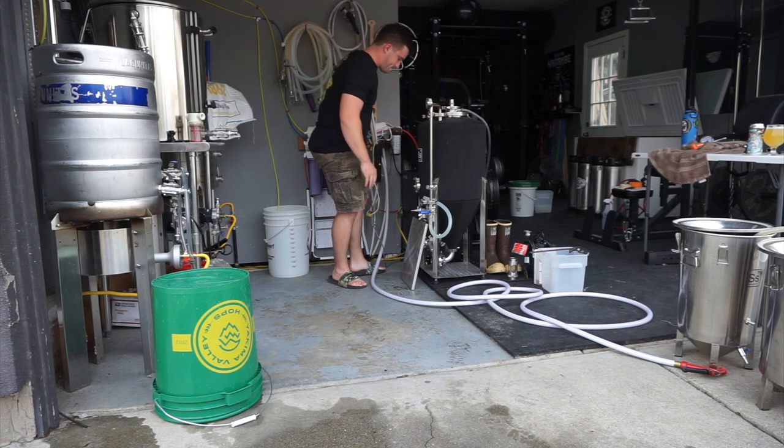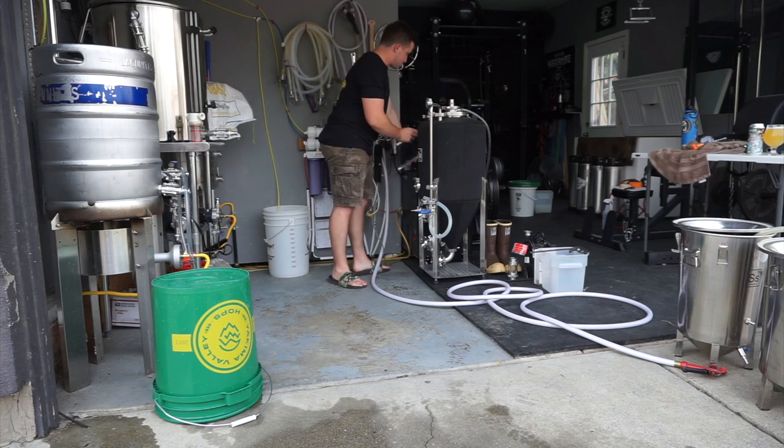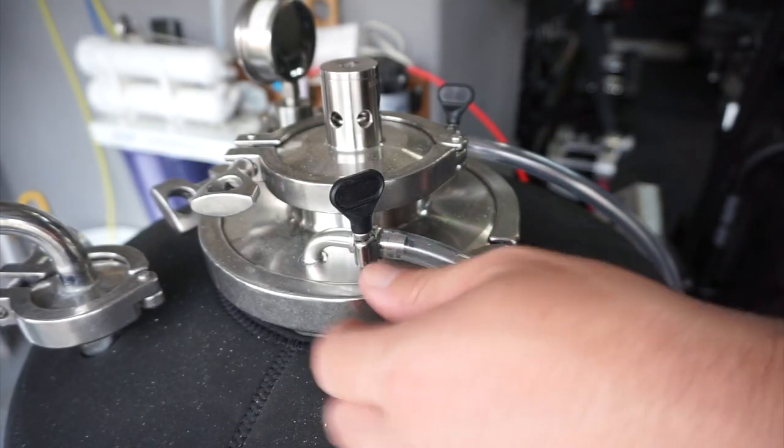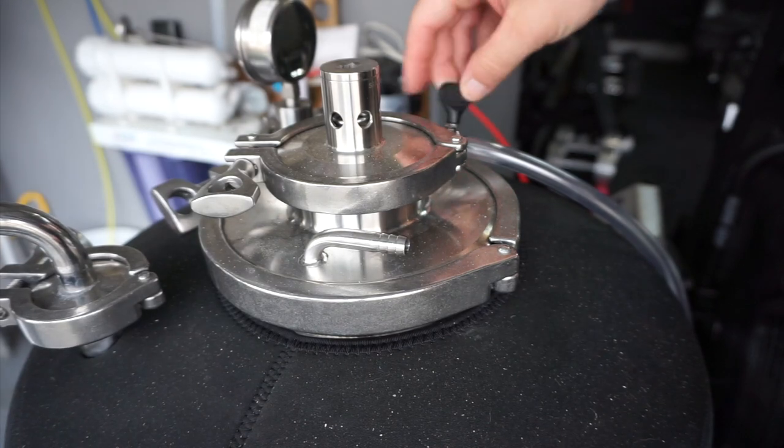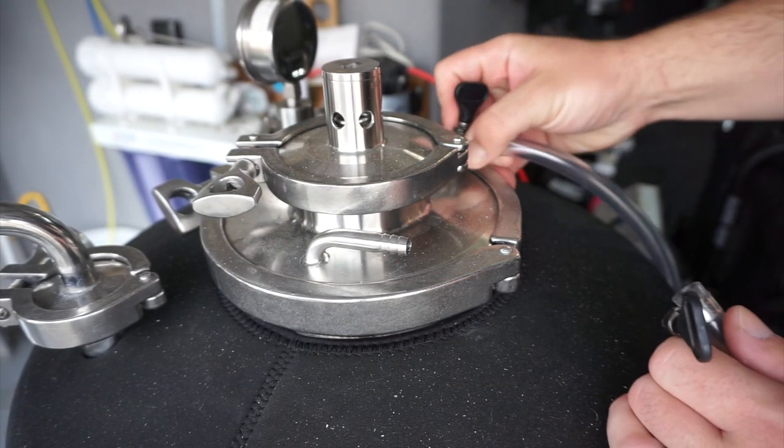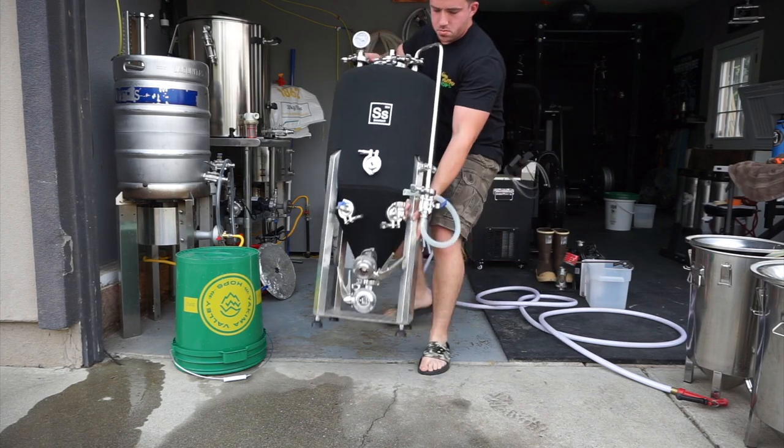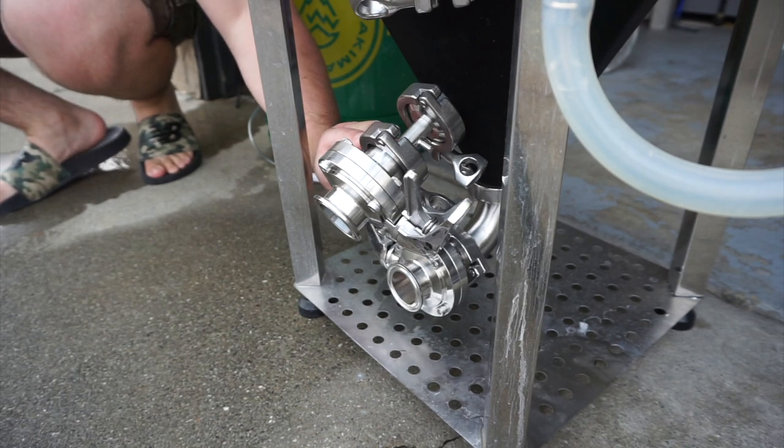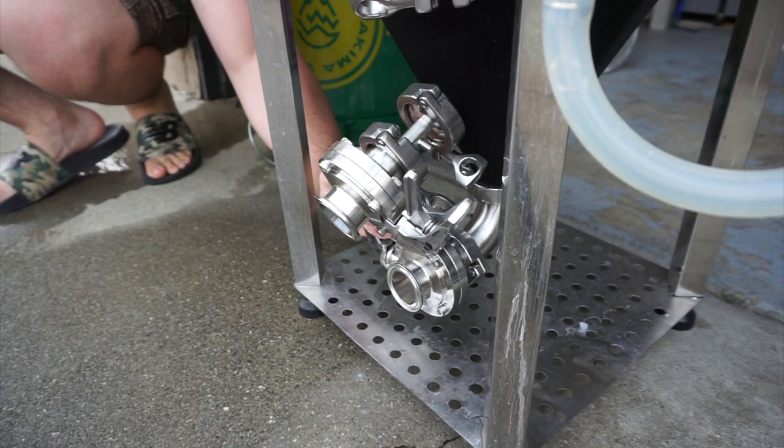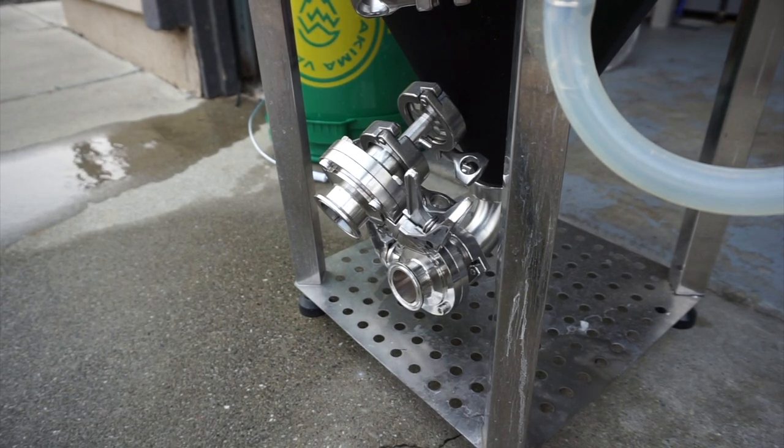First thing you want to do is ensure that your glycol lines are removed unless you don't plan to move the vessel. I disconnect those and try to blow out all the glycol from the coil inside beforehand to ensure it stays in the reservoir. Then I bring it out into the driveway to do the first step, which is a cold water or tap water rinse that you're using to get as much of the organic material that was left over from fermentation out from the vessel.